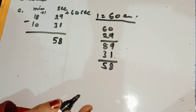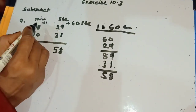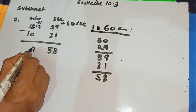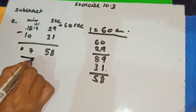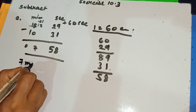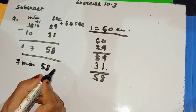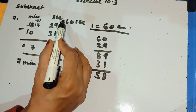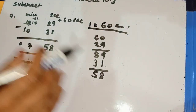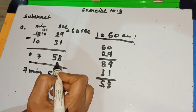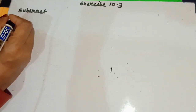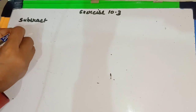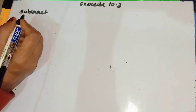Is it clear? When we take 1 minute from the minutes column, 17 minutes are left. So 7 minus 0 is 7 and 1 minus 1 is 0. The final answer is 7 minutes 58 seconds. One more time: when we take 1 minute carry, first convert it into seconds, then do the subtraction easily to get the correct answer. By this process you can do question B. Question C is a little different because hour, minute and second are all given.